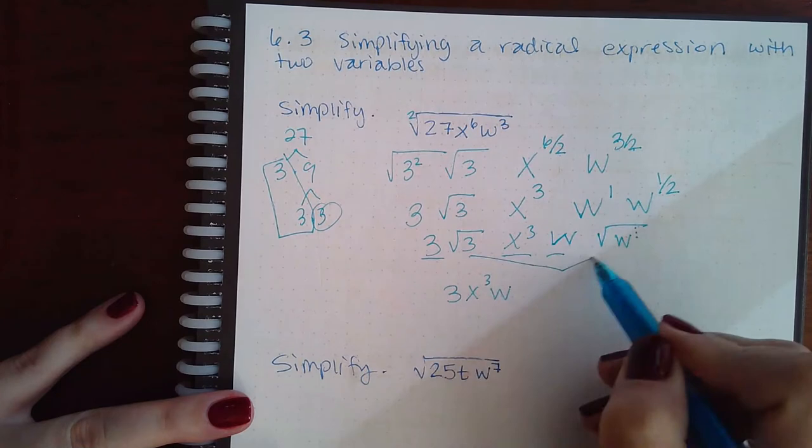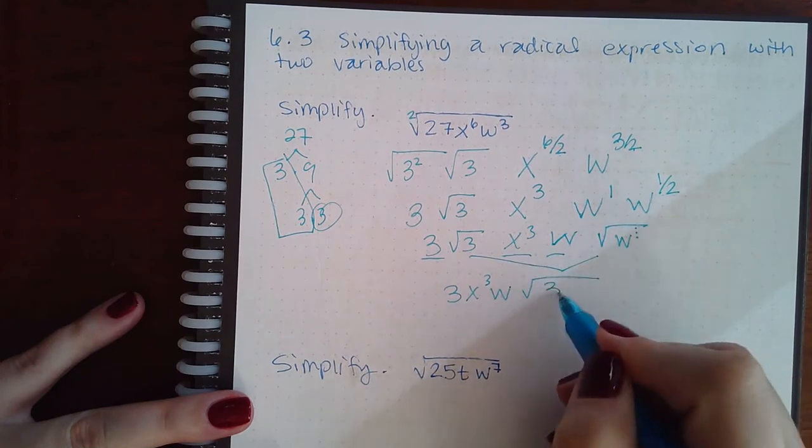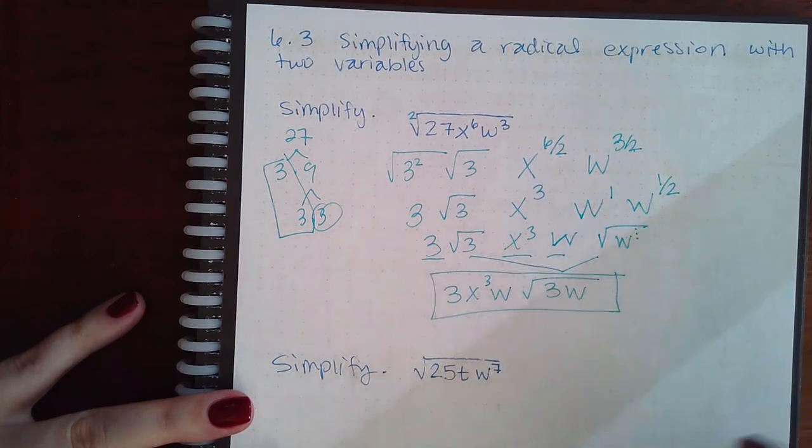and take the inside of the square roots and multiply them together. We get 3w, and this is the final expression.